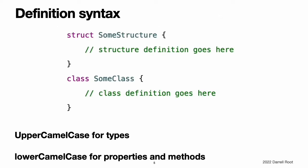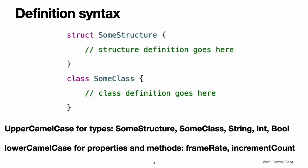Definition syntax. Structures and classes have a similar definition syntax. You introduce structures with the struct keyword and classes with the class keyword. Both place their entire definition within a pair of braces. Note: whenever you define a new structure or class, you define a new Swift type.